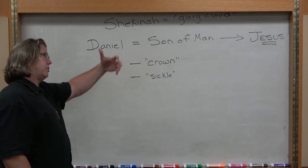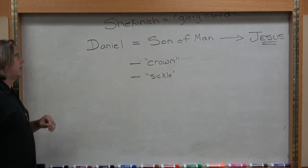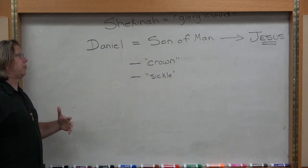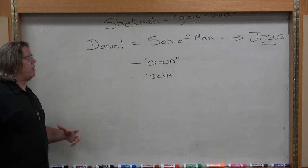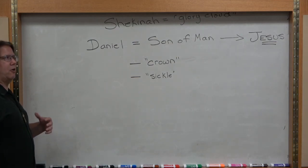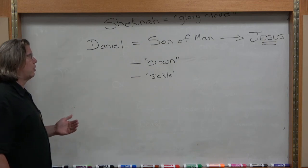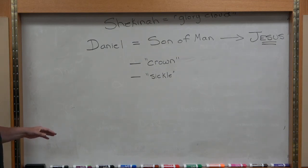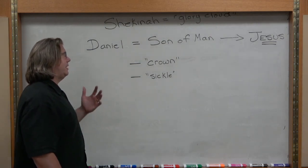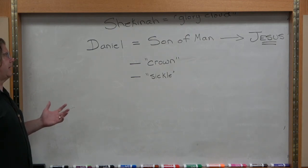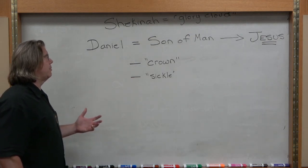Moses entered the cloud of glory at the top of Mount Sinai where he met God and received the Ten Commandments. The glory cloud followed Israel through the desert. It came down upon the tabernacle and later upon the temple to manifest at the ark. In the New Testament it's all over as well — Christ ascends to heaven on the cloud of glory, and Hebrews speaks of the cloud of witnesses being the saints who inhabit this cloud of glory.